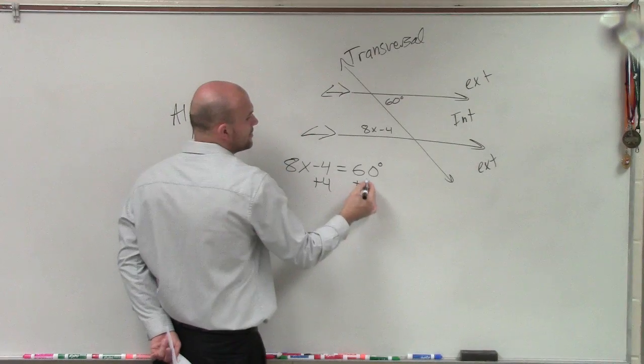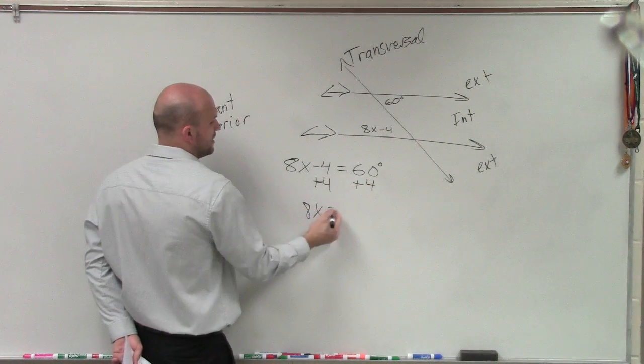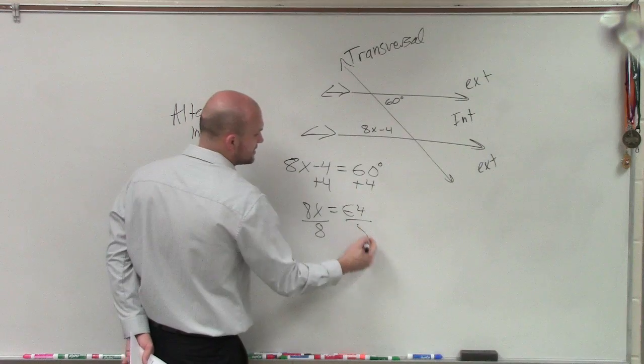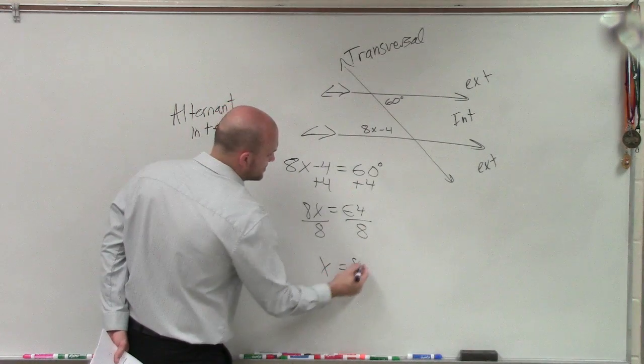So you add 4, 8x equals 64. Divide by 8, divide by 8, x equals 8.